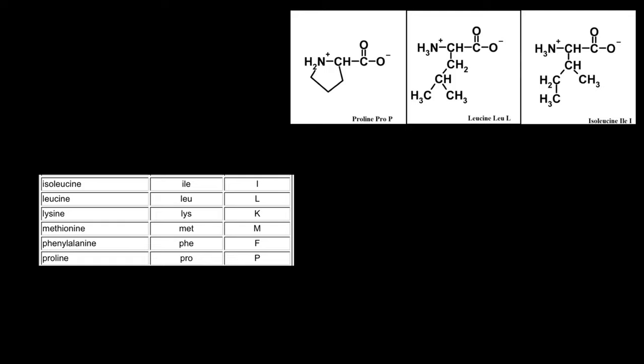Phenylalanine — the first three letters come from the name of the amino acid. But instead of P for the one letter abbreviation, we have F, because P-H is read as F. Now, proline would be P and not phenylalanine. Take a look at this picture — here is proline. Proline would be the most rigid amino acid because it has a cyclic side chain that ends on the amino group, so it doesn't bend or rotate. We think of rigid as strong.